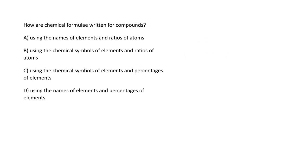How are chemical formulas written for compounds? The right option is B: using the chemical symbols of elements. Like hydrogen is H, oxygen is O, nitrogen is N. We write these chemical symbols in a particular ratio. For example, water's formula is H2O, and nitrogen molecule's formula is N2. This is their ratio.